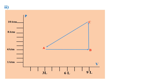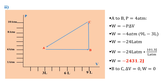We calculate the work done for each process. From A to B, there is constant pressure but increasing volume. Using W = −PΔV, the pressure is 4 atmospheres and the change in volume is 9 − 3 = 6 liters, giving −24 liter·atmospheres. Converting using 101.3 joules per liter·atmosphere, we get a work done of −2,431.2 joules for the A to B process.